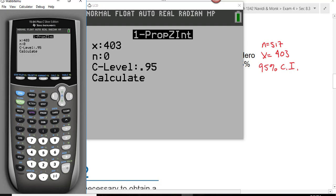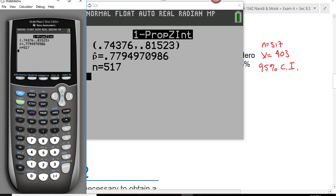X is your number of successes for this problem, that was 403. N is the number of people that you survey, that was 517. Our confidence level is 95%, so we leave that alone. Go down to calculate and hit enter, and we get this for our output screen.